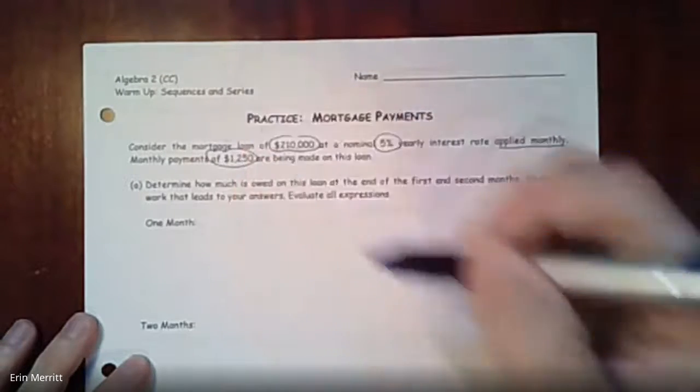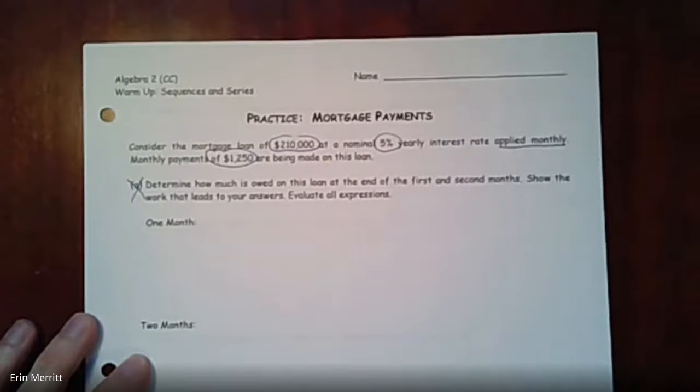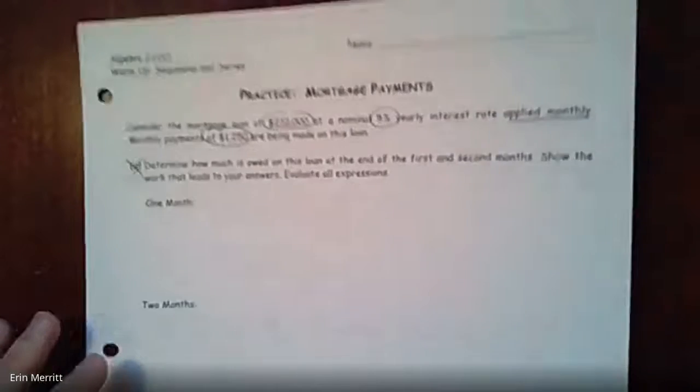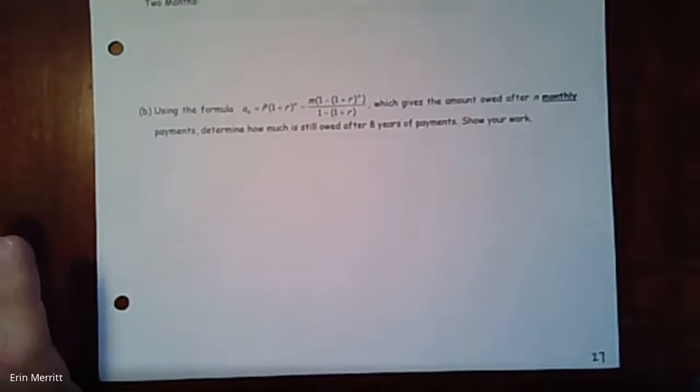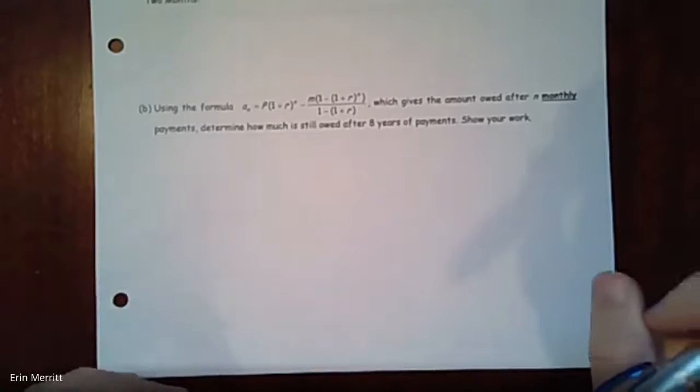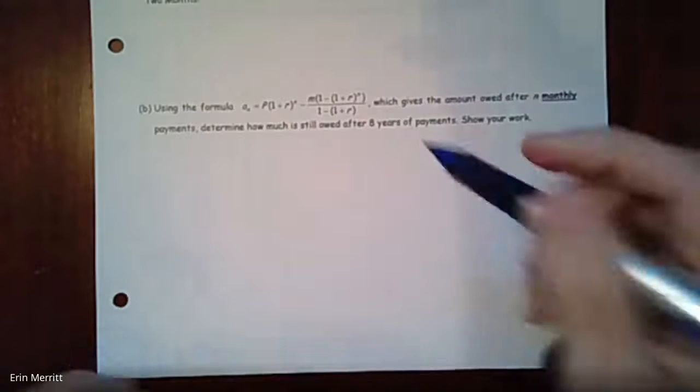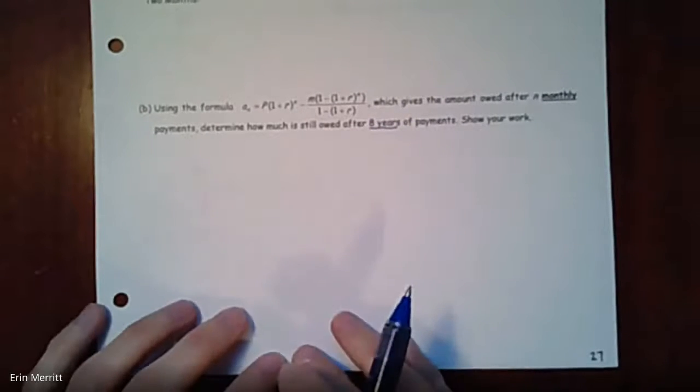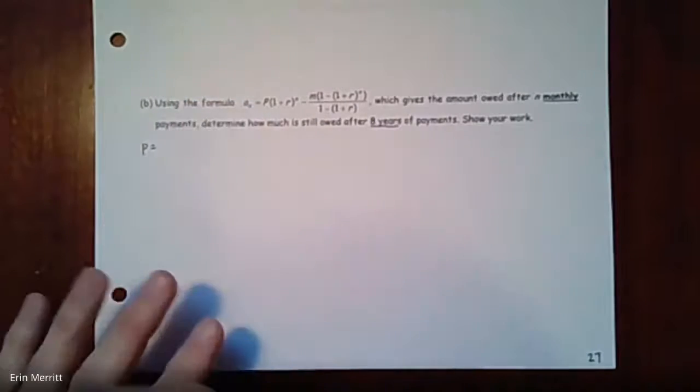There's all those key numbers that we need right there - 5% monthly payment. We are not going to do part a, we don't need to do that part. Let's go all the way down to part b. Just make sure that you have your paper in front of you because you're not going to be able to see it on my paper here. It says use the formula which gives the amount after n monthly payments of how much is owed at the end of, in this case, eight years.